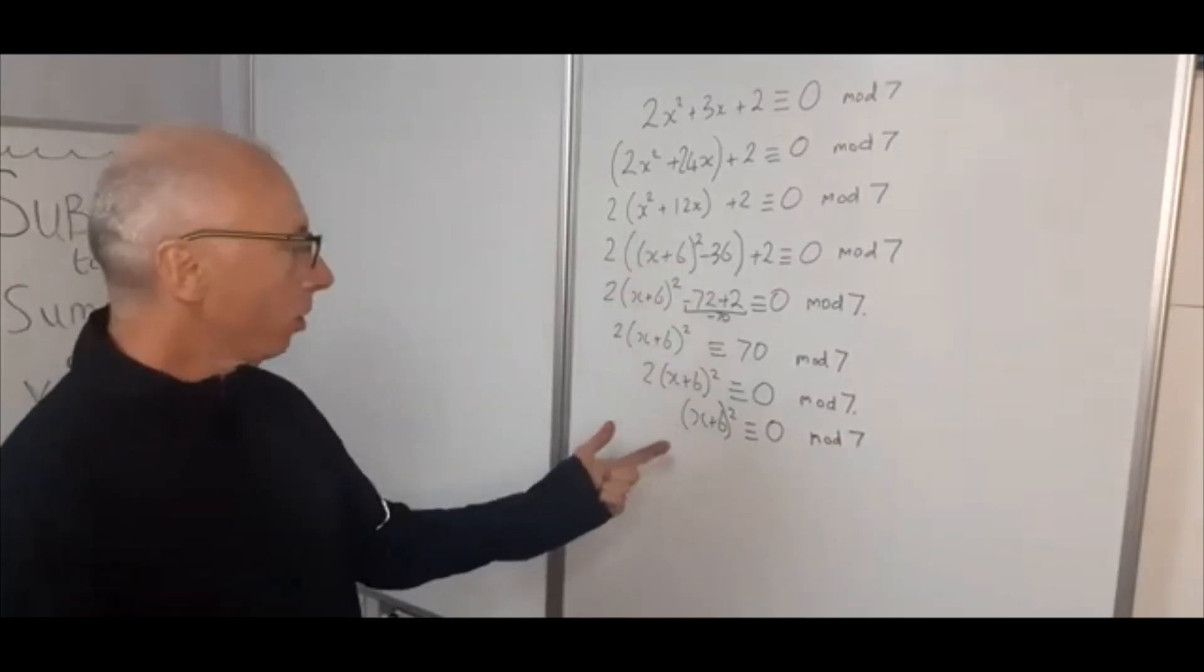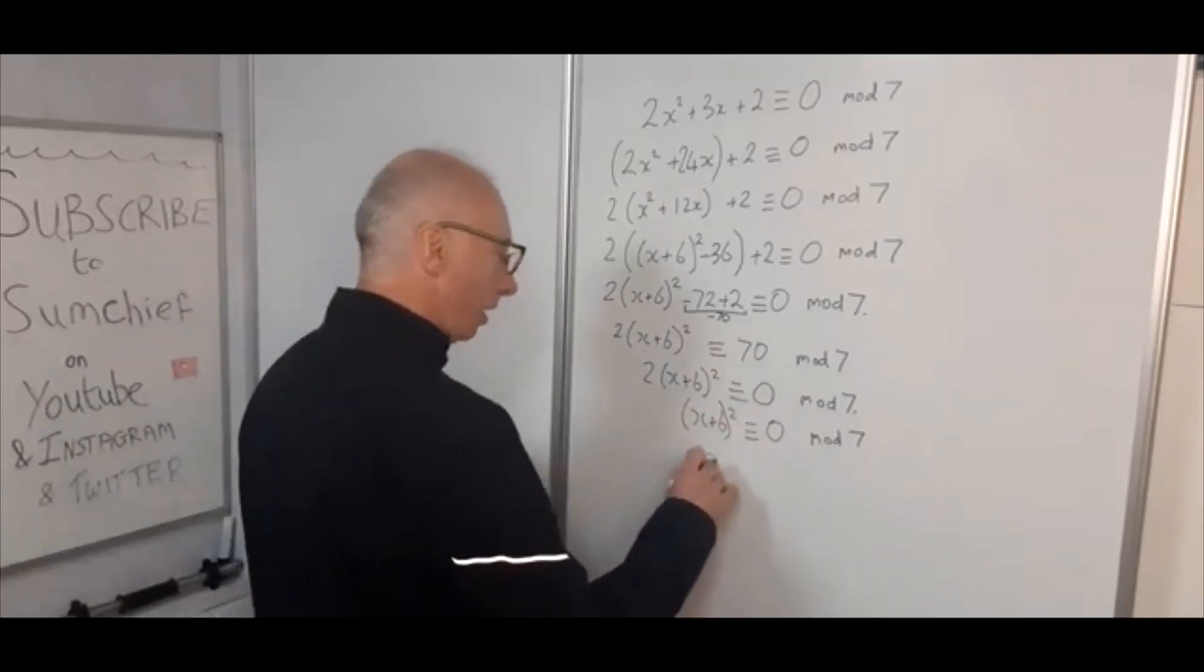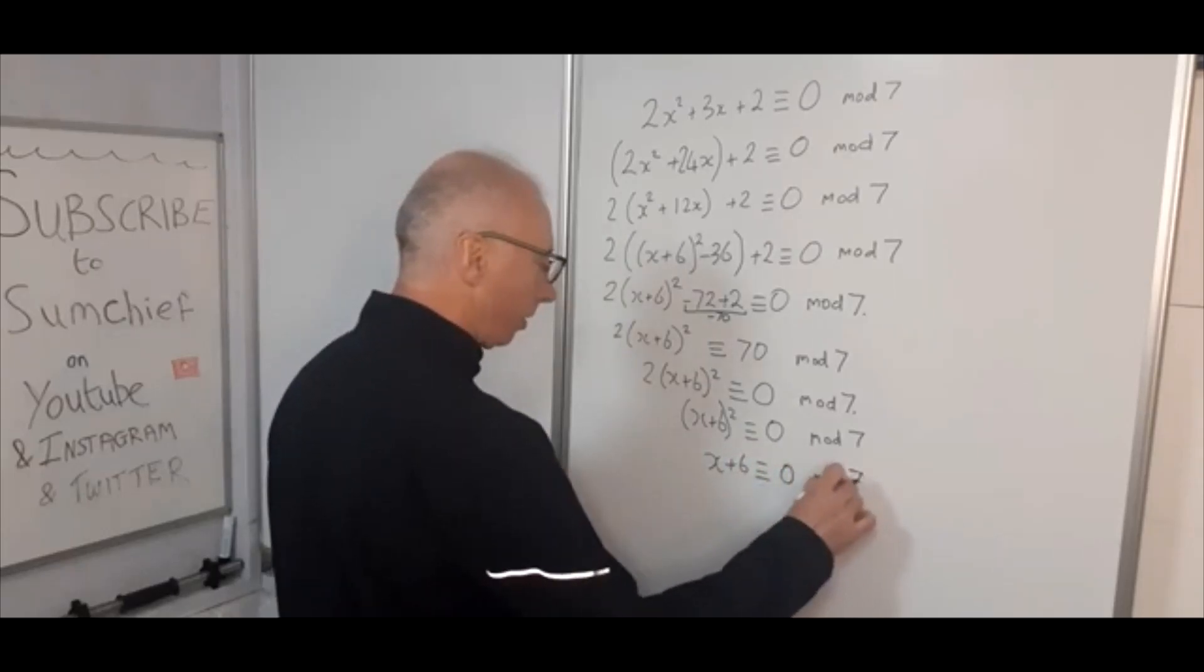Okay, now we take the square root on both sides just to eliminate this squared side. And now with x + 6 is congruent with the square root of 0, which is still 0 mod 7.